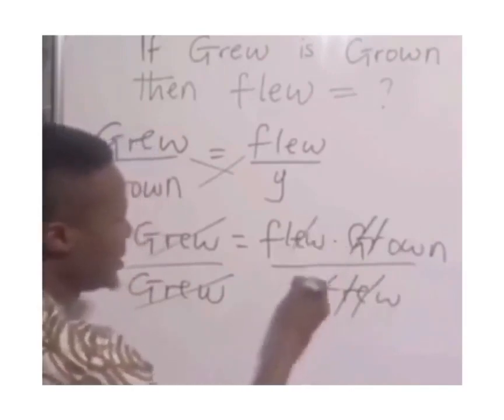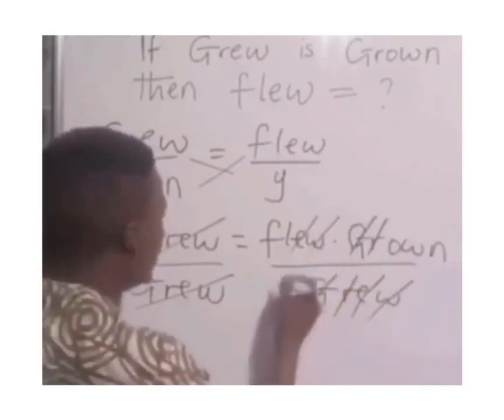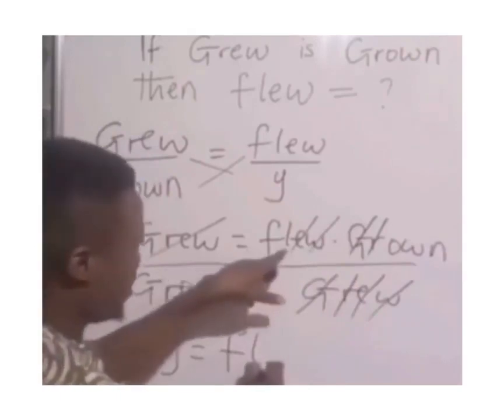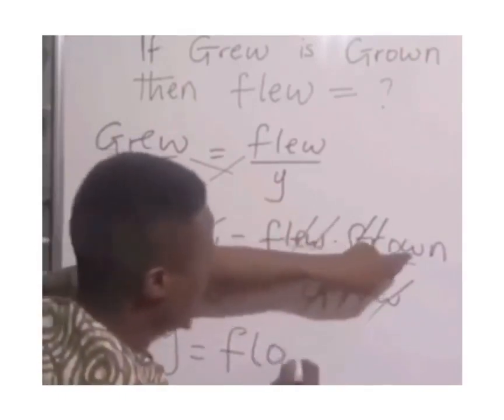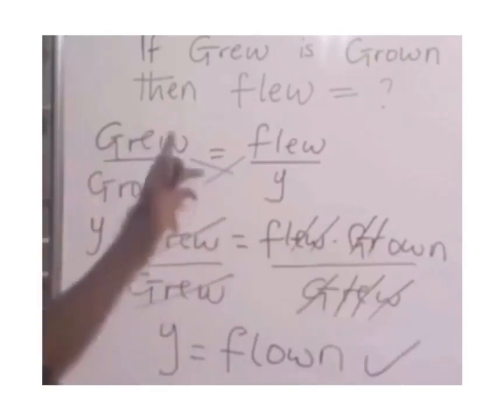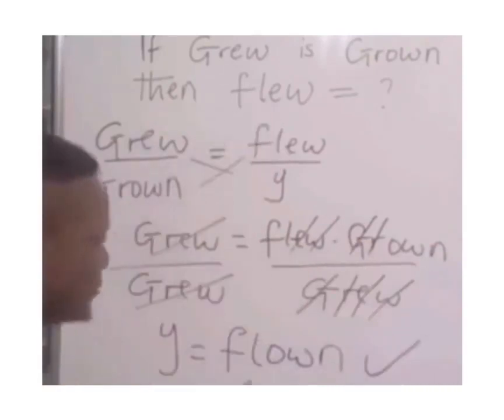G will cancel G, R will cancel R, E will cancel E, W will cancel W. So y is F-L-O-W-N. Therefore, the past participle of fly is flown.